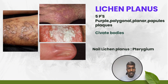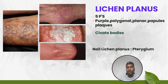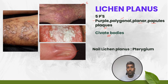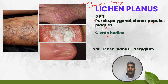Look at this image — it is lichen planus. Remember the five P's: purple, polygonal, planar, pruritic, and papules. You will see Civatte bodies. In lichen planus, remember the true Koebner's phenomenon. In nail lichen planus you will see pterygium — very important.